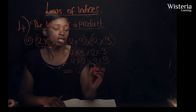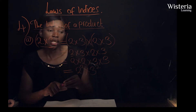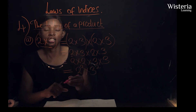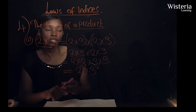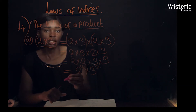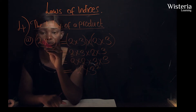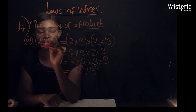This gives us two to the power two times three to the power two. So when we are using this fourth law — the index of a product — we just distribute the power to the bases inside the bracket.